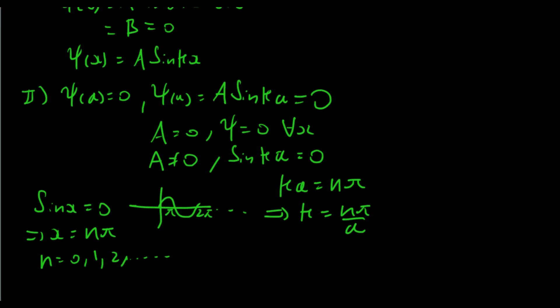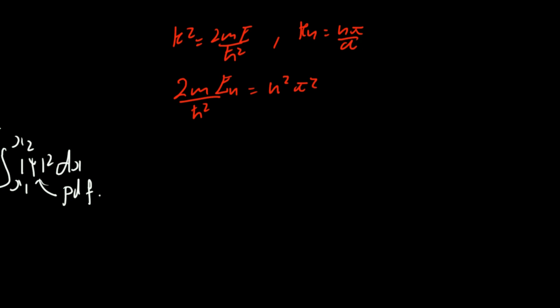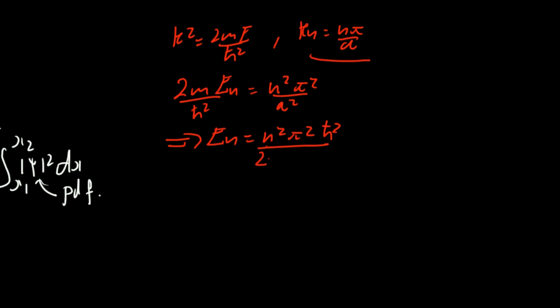There are infinitely many values k can take. Because k is written explicitly in terms of E, the energy itself is also quantized. We know k squared equals 2mE over h bar squared, and kn equals n pi over a. So 2mEn over h bar squared equals n squared pi squared over a squared. Rearranging, En equals n squared pi squared h bar squared over 2ma squared.